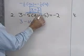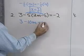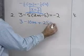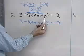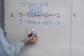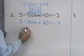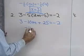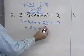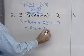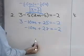And then negative 5 times negative 5 is positive 25. So I apply the distributive property first to separate the terms, so I don't have any parentheses left. Simplifying a bit more, this is negative 10m plus 3 plus 25, which is 28, is equal to negative 2.